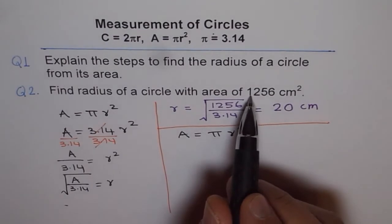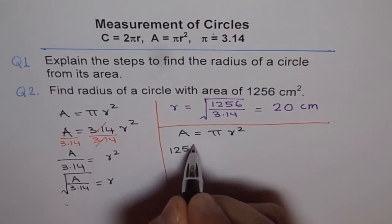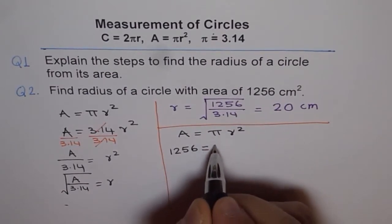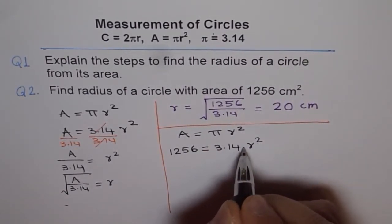Area is given to us as 1256. So instead of A, let me write 1256 = pi is 3.14 and r² which we need to find.